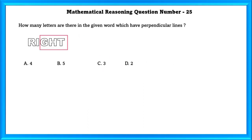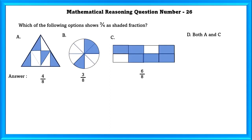Question No. 25: How many letters in the given word have perpendicular lines? G has a perpendicular line, H has a perpendicular line, and T has a perpendicular line, so there are 3 perpendicular lines. Question 26: Which option shows 3/4 as a shaded fraction? The triangle shows 4/8 = 1/2, the circle shows 3/8, and the rectangle shows 6/8 = 3/4. So our answer is C.